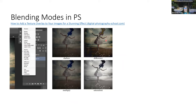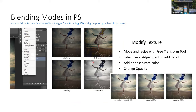Here's someone else's work from DigitalPhotographySchool.com — they used soft light. They also used darken mode, and then difference mode which takes the difference between the top and bottom layers. Then multiply, and saturation. Adding and changing your opacity from zero to 100% — you can see how dramatically you can change your image just by changing the blending mode and opacity.